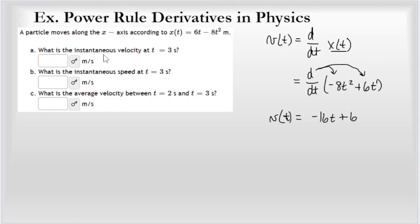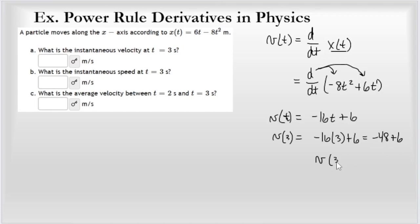When asked for the instantaneous velocity at t equals 3 seconds, we plug 3 into the velocity function: V(3) equals negative 16 times 3 plus 6, which gives negative 48 plus 6. So the velocity at 3 seconds is negative 42 meters per second. The units come from x in meters and time in seconds, giving meters per second.